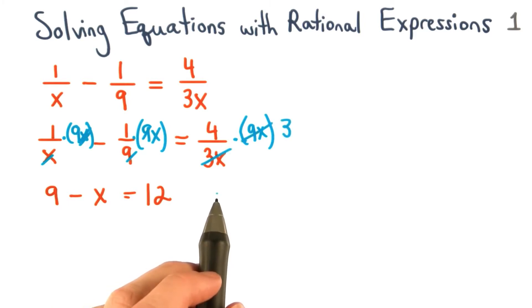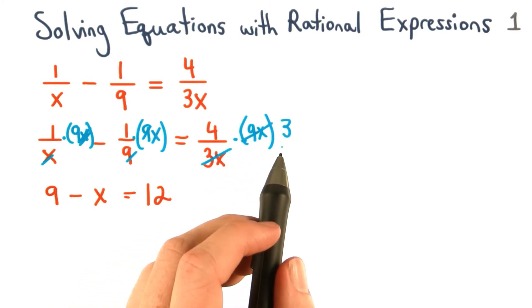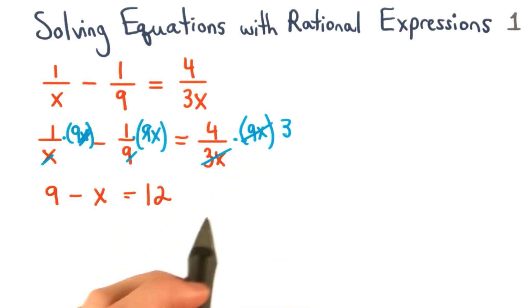And finally, for our last fraction, 9x divided by 3x equals 3. So we're left with 4 times 3, which equals 12.